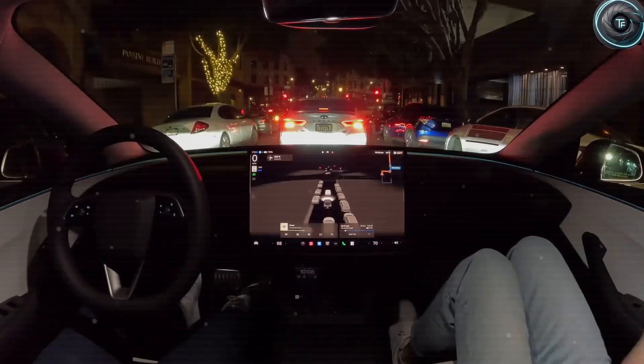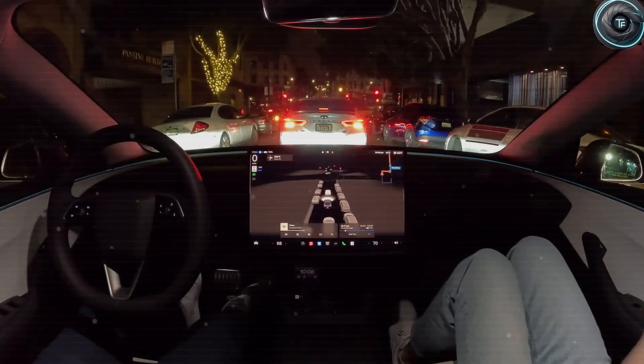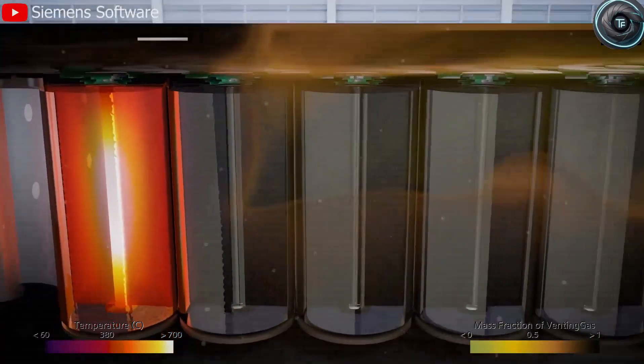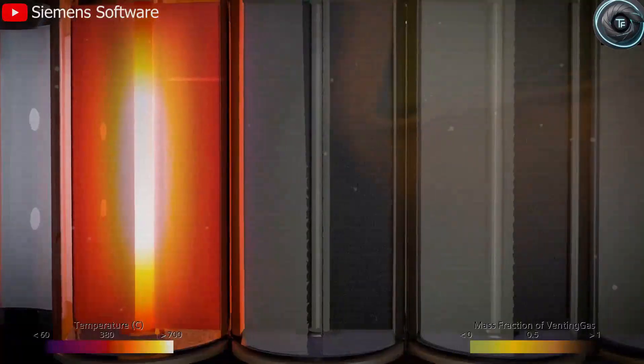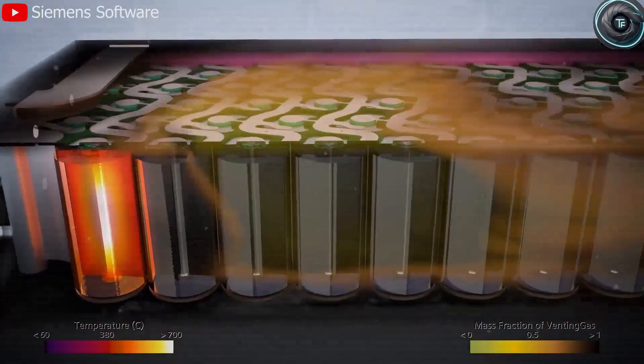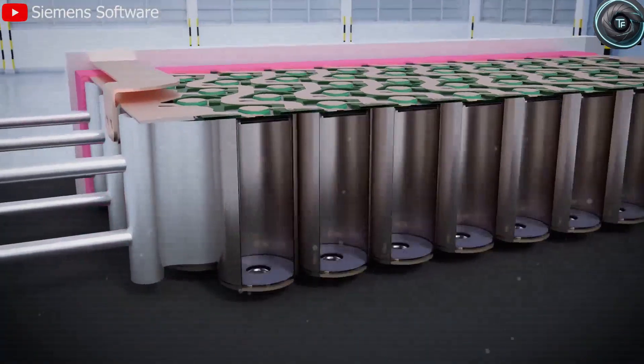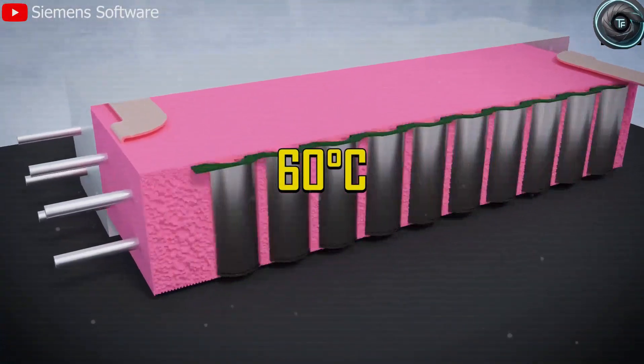But according to Fremont Insiders, Tesla is already quietly testing a 60 kWh sodium-ion pack designed specifically for the Model 2 and built for mass production. Early test data suggests that this pack can sustain continuous power output of around 120-150 kW without overheating.